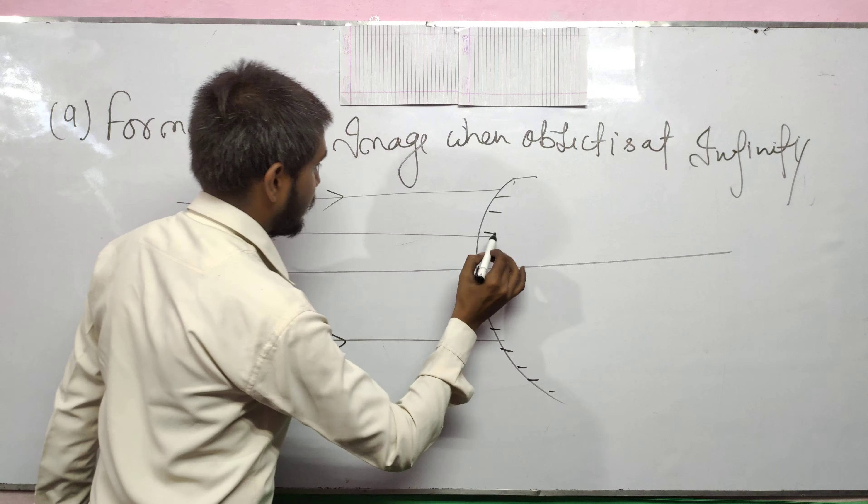This is the principal axis. The rays coming from infinity are parallel to each other and also parallel to the principal axis.